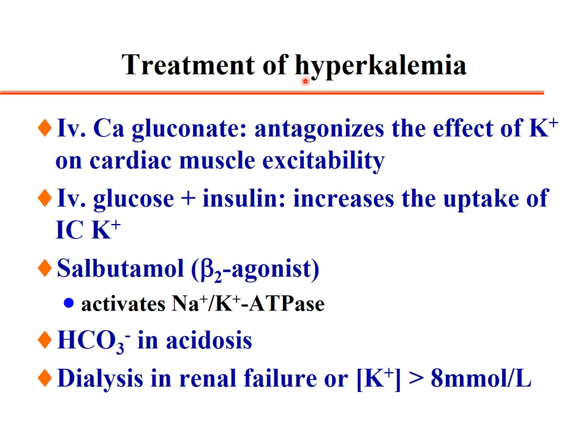Treatment of hyperkalemia: first, blunt cardiac muscle excitability by giving calcium gluconate — calcium as a bivalent ion antagonizes potassium effects on cardiac muscle cell channels. Then, infuse glucose together with insulin to redistribute potassium intracellularly by activating sodium-potassium ATPase. Beta-2 agonist salbutamol has the same redistribution effect.